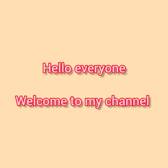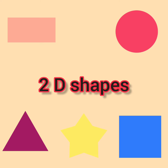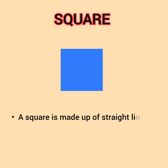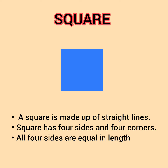Hello everyone, welcome to my channel. In this video we learn about different 2D shapes. First is square. A square is made up of straight lines. A square has four sides and four corners, and all four sides of a square are equal in length.